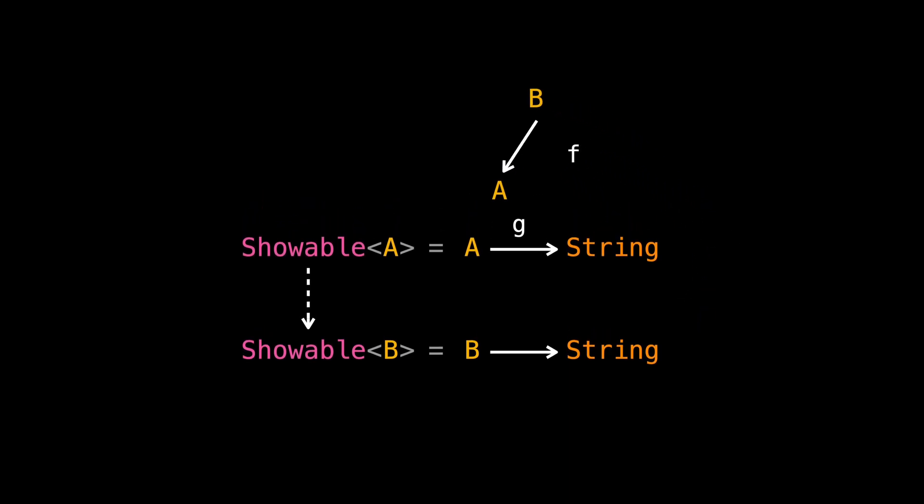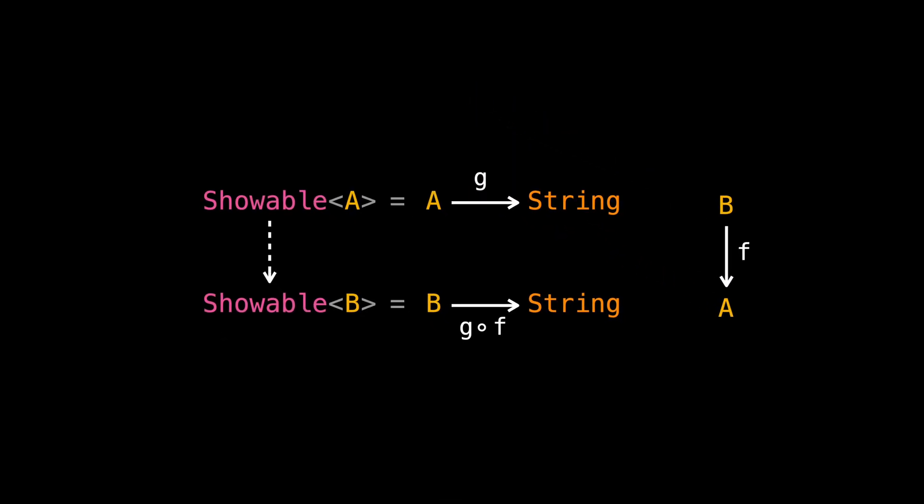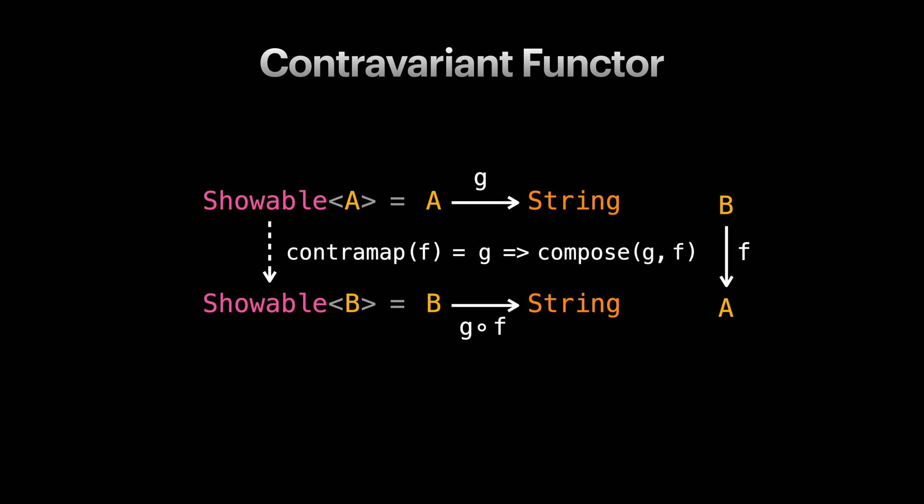If it was from B to A, we could have composed F and G, and unsurprisingly, this would have been what we were looking for. This is actually another kind of functor, which is called contravariant functor. In contravariant functor, instead of map, we have contramap, which receives a function F from B to A, and lifts that to our context. For example, Showable contramap receives F and returns function that receives G, and returns the composition of F and G.